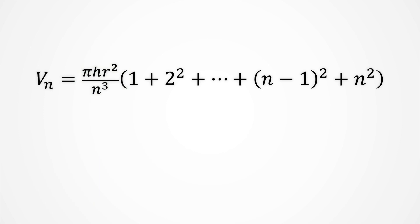Now we have a formula for the nth approximation. And in order to obtain the volume of the cone, we have to consider more and more cylinders. But as n goes to infinity, we encounter a quotient,